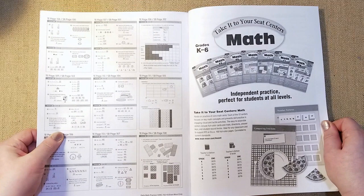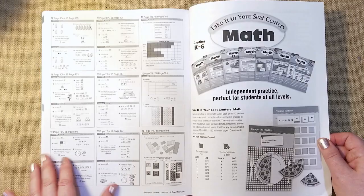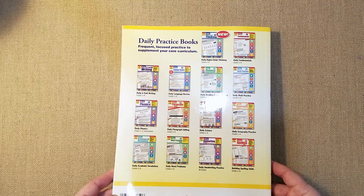So this is the answer key here. So if your kids know that, I would suggest that you take that out. But they have grades kindergarten through 6, which is awesome for the independent practices, perfect for students of all levels. And this is really, really fun. I really enjoy Evan Moore.